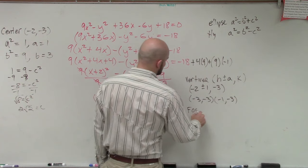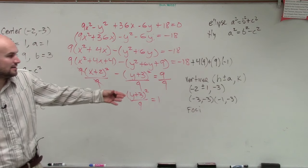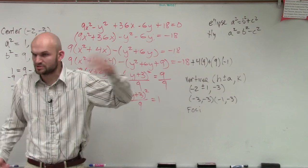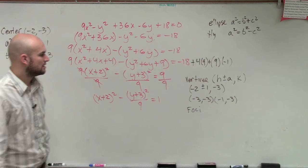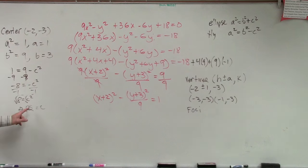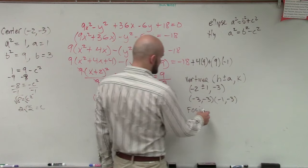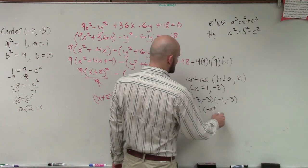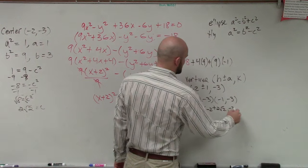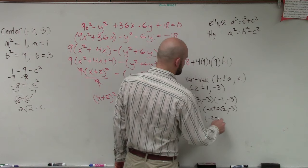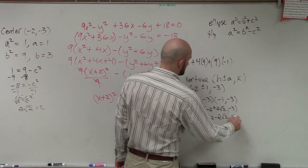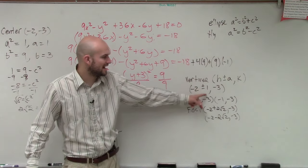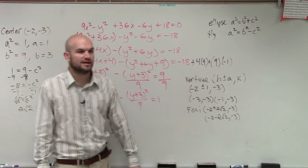Last, I need to do my foci. Your vertices, foci, and center are all going to be on the transverse axis, similar to the major axis. The foci — since c is 2 square root of 2 — are going to be negative 2 plus 2 square root of 2, negative 3 and negative 2 minus 2 square root of 2, negative 3.